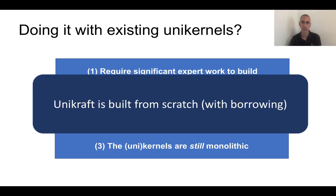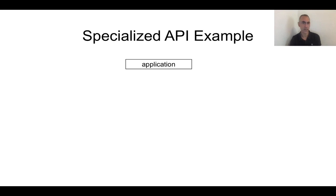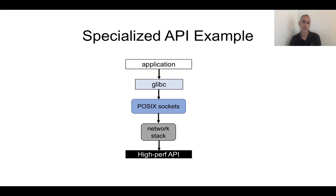Unikraft is built from scratch to be modular, and of course we borrowed some pieces so we're not reinventing the wheel where it's not needed. The second design principle is specialized APIs. Imagine you have an application that wants to do network processing — it's going to plug into glibc, then POSIX sockets, then the network stack, and eventually maybe a high performance API. The problem is all these intermediate layers stop it from going fast. Instead, if the application just needs UDP, you could code against the high performance API directly — this is a kind of bypass, and in Unikraft this is really simple to do.